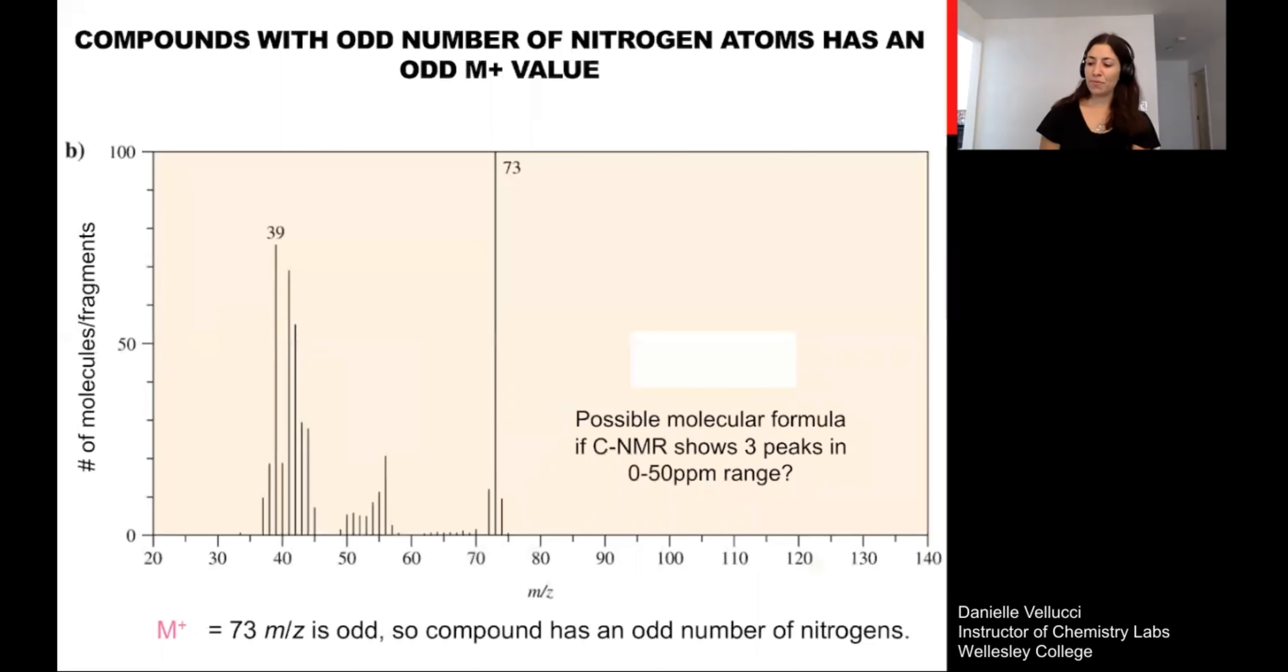So when we look in the mass spec, there's a few other diagnostic identifiers that can be really helpful. Compounds that have one nitrogen or any odd number of nitrogen. So if you have one nitrogen or three nitrogen atoms, we're probably not going to look at too many that have more nitrogen than that at this point. They tend to have an odd mass number. So again, we look far to the right because we're looking for the highest mass that most likely represents our intact molecule. Now we see this signal here, 73 is an odd number.